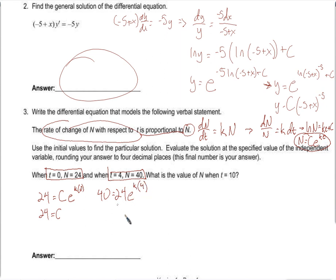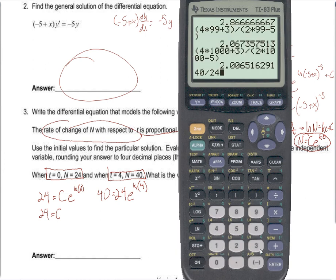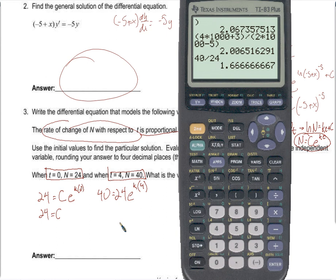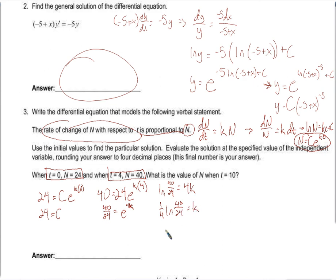We need to solve for k. Dividing both sides by 24 gives 40 over 24 equals e to the 4k. Taking the natural log of both sides: the natural log of 40 over 24 equals 4k. Dividing by 4: k equals one-fourth times the natural log of 40 over 24. Now we know both c and k.